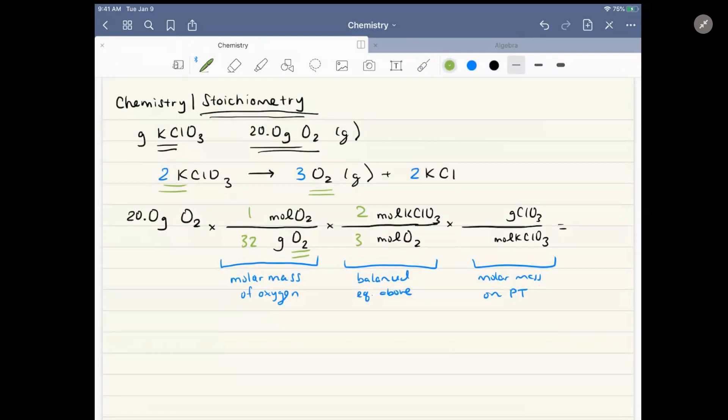Let's do a quick little calculation here. That's 35.45 plus 3 times 16. We get 83.45 grams per mole.